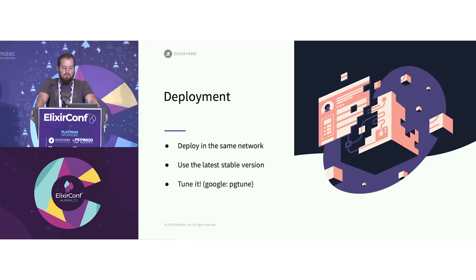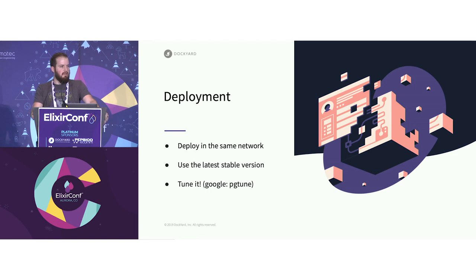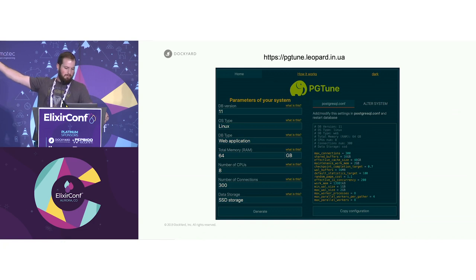For deployment: deploy in the same network — you'll incur significant latency if your Postgres database is on a different network. Use the latest stable version — a lot of people are still on Postgres 9 or 8, and it's relatively painless to upgrade. Tune your database — very often people run with a vanilla Postgres installation without realizing there are many tuning variables that will make the database perform better with your hardware, especially on SSDs. Postgres doesn't come tuned for SSDs by default. Go to pgtune.leopard.in and it will give you useful defaults for tuning your database.